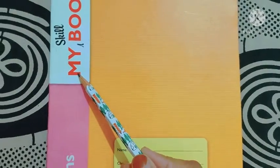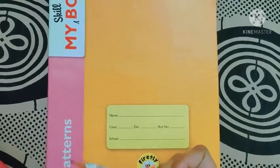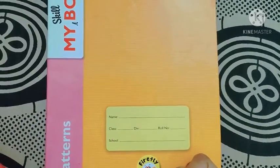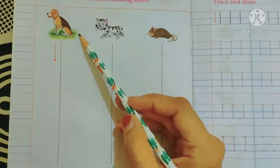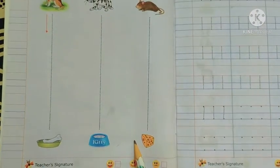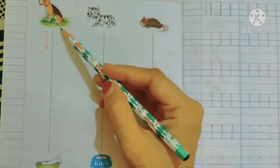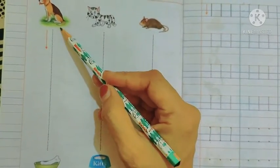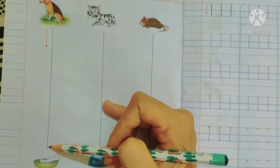Take out your My Skill Patterns copy and open page number 2. Can you see these animals? And this is their food. We have to make the path for them so that they can reach to their food.